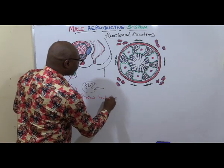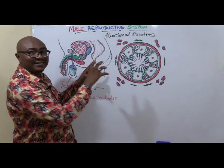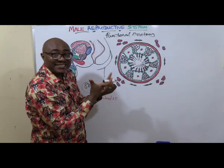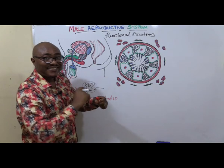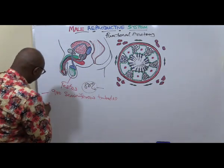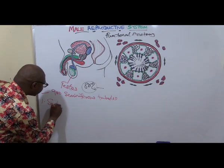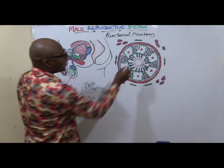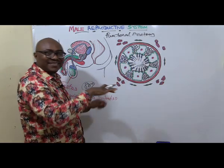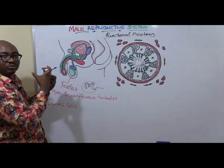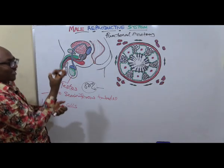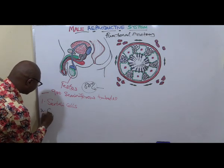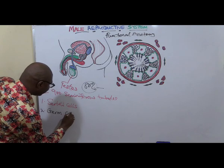In these seminiferous tubules we have two main cell types. One of them is a large cell known as sustentacular cells, popularly known as Sertoli cells. Then around the Sertoli cells you have the germ cells, also called spermatogonium. From those germ cells the sperm are produced.